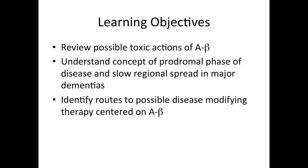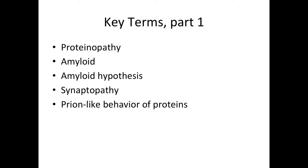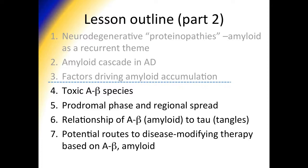In this part two of this two-part series, I will review some of the possible toxic actions of A-beta. I'll also help you understand the concept of prodromal disease and the slow regional spread in major dementias, and I hope you will be able to identify routes to possible disease-modifying therapy centered on beta-amyloid. Key terms include those from part one: proteinopathy, amyloid, and amyloid hypothesis. Two new terms in this part two include synaptopathy, or disease of the synapse, and the prion-like behavior of proteins.